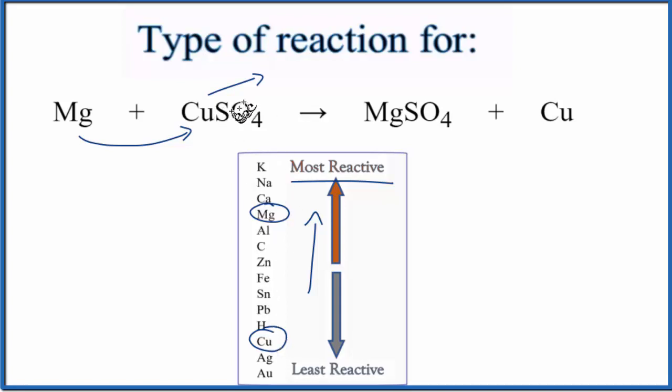The copper, which is less reactive, ends up by itself. This is Dr. B with the type of reaction for Mg plus CuSO4. Thanks for watching.